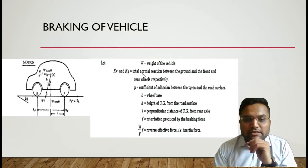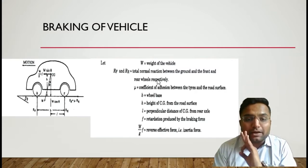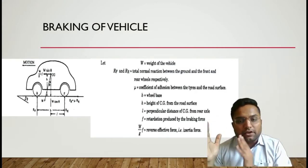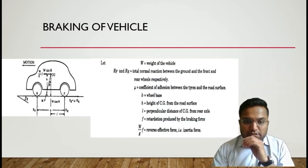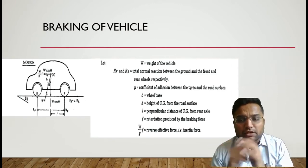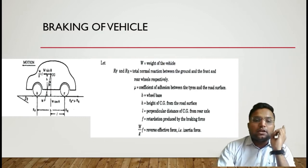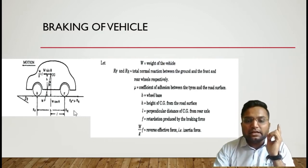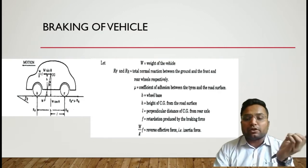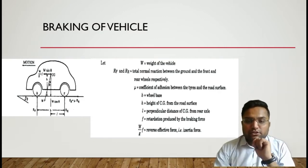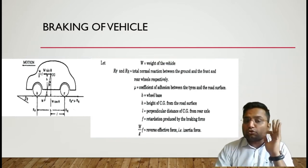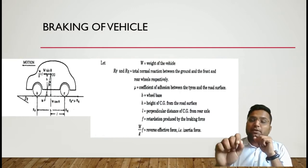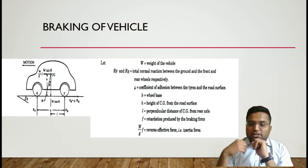Basic terminology: R_F and R_R are the total normal reactions between the ground and the front and rear wheels. Mu is the coefficient of friction. B is the wheelbase. H is the height of CG from the ground. L is the perpendicular distance from the CG to the rear axle. F is the retardation produced by the braking force, and W/G times F is the inertia force, represented by M.